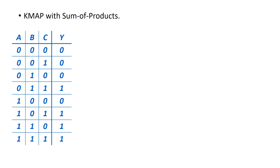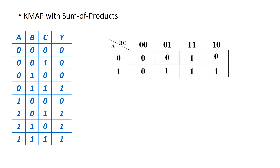Let's start with a quick recap of K-map with sum of products. Here is a truth table with input variables A, B, C — so it's eight rows on the truth table and the output is Y. This truth table leads us to a Karnaugh map, which is basically a 2D representation of that same truth table.